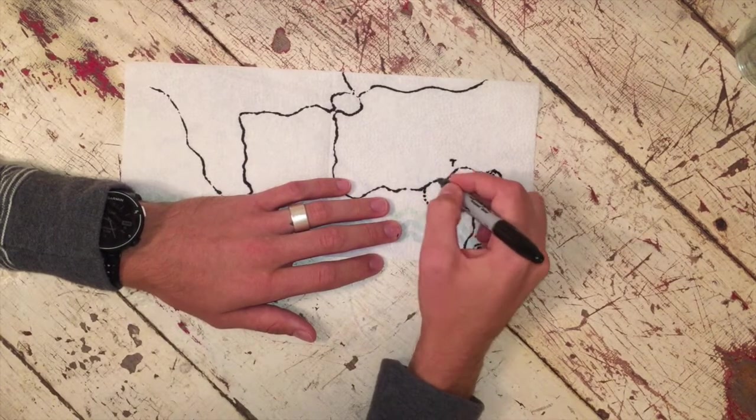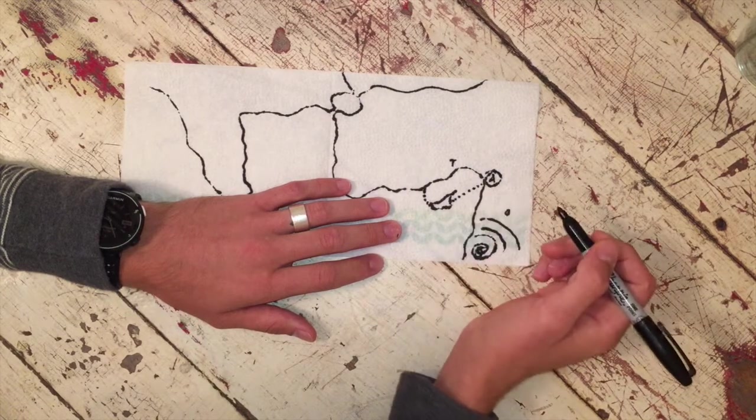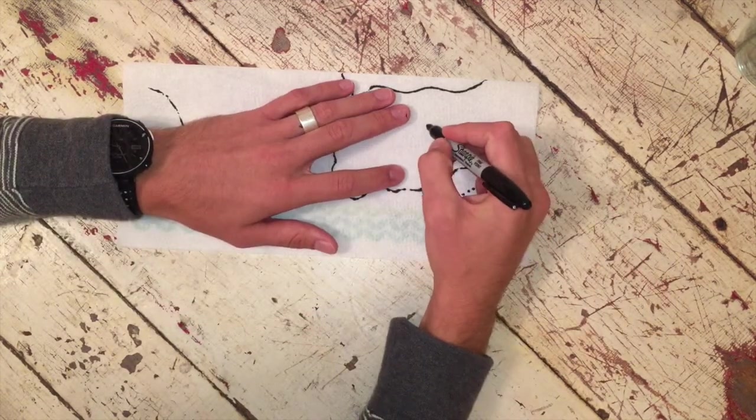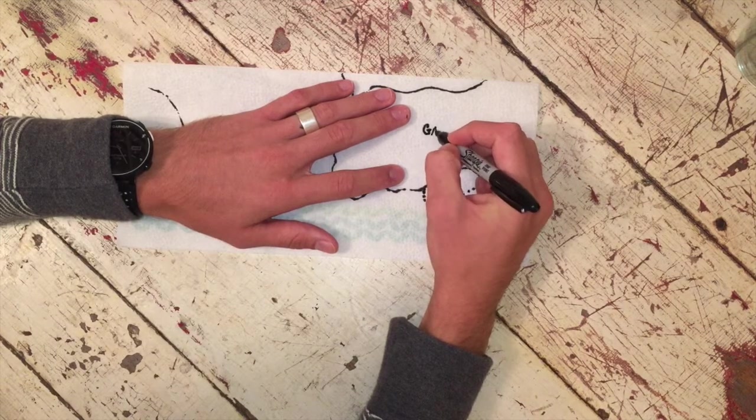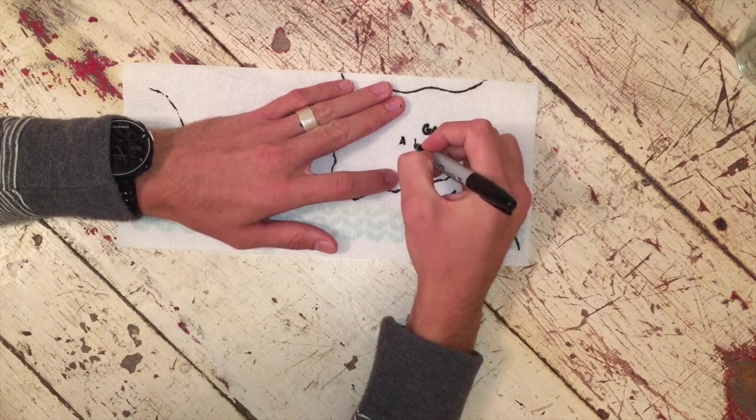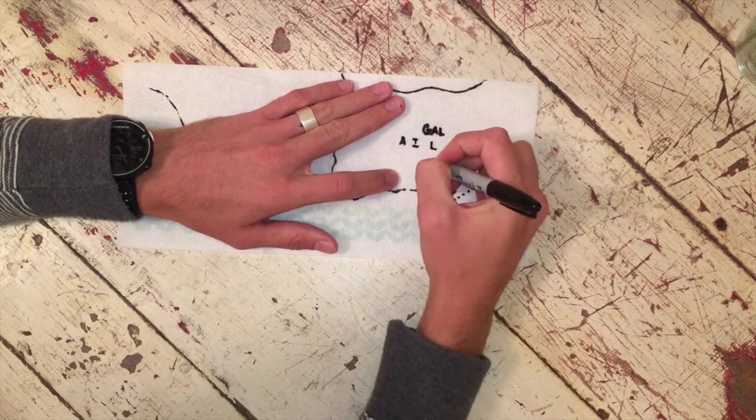So they get here to, I believe it's Perga, Pamphylia, John Mark goes back to Jerusalem, and then they go on their inland journey through Galatia. So I'm just going to write G-A-L. Within Galatia, we have Antioch and Pisidia, Iconium, Lystra, and Derbe.